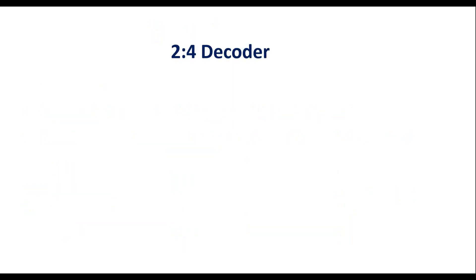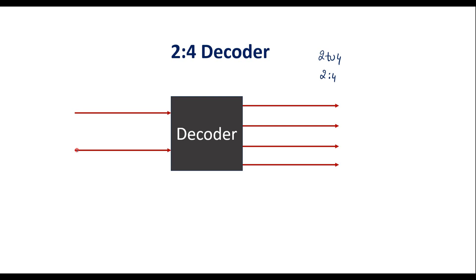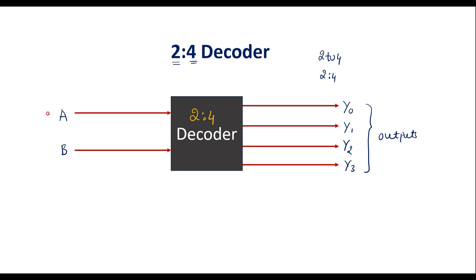Now let me concentrate on the 2-to-4 decoder, also known as the 2-is-to-4 decoder. Let me draw the block diagram. A 2-to-4 decoder has 2 inputs and 4 outputs — this 2 indicates the number of inputs and this 4 indicates the number of outputs. Let me take A and B as inputs and Y0, Y1, Y2, and Y3 as outputs.